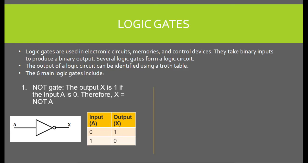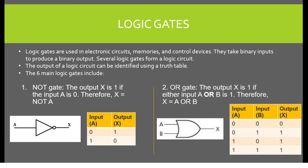OR gate. The output X is 1 if either input A or B is 1. Therefore, X equals A or B. So when the input is 1, the output is 1.